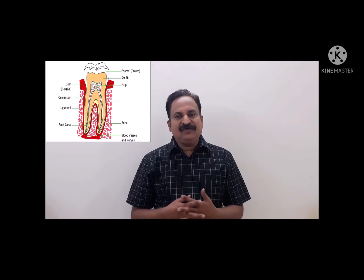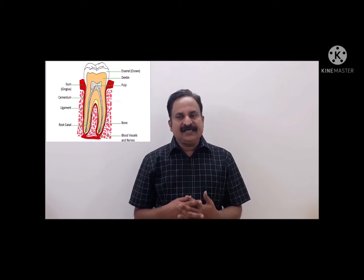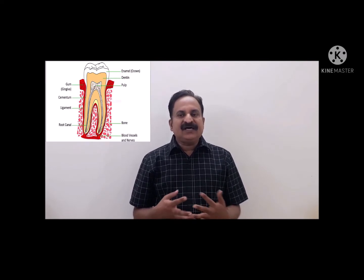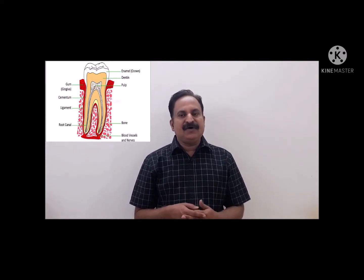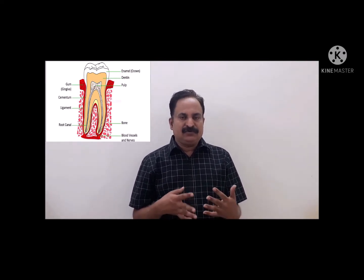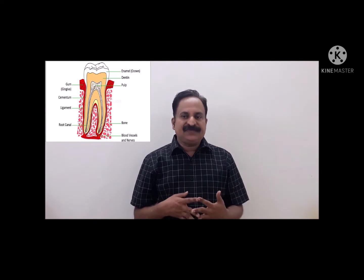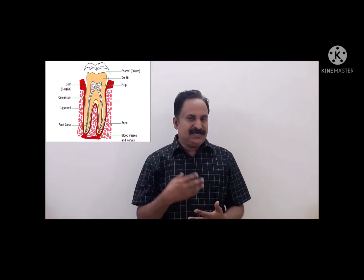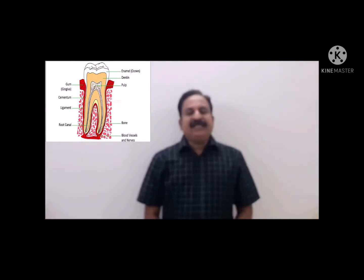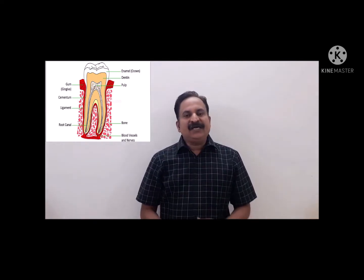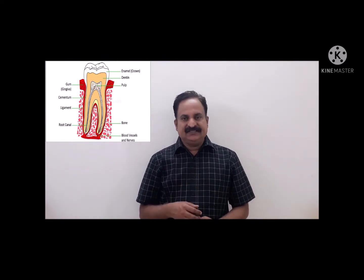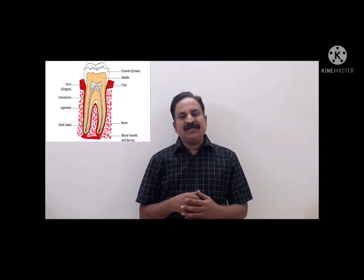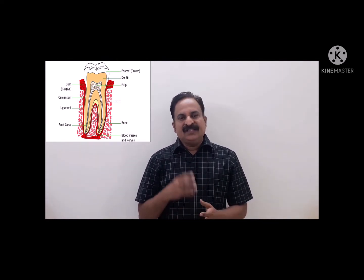Teeth have evolved from denticles which are released from armor near the margins of the mouth as ossification in the integument. A typical mammalian tooth can be distinguished mainly into two regions: crown and root.